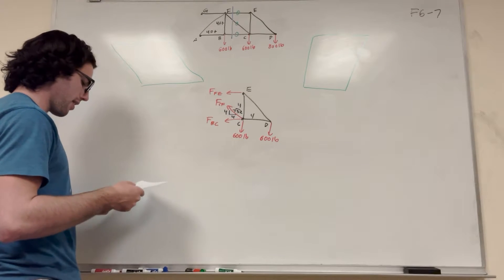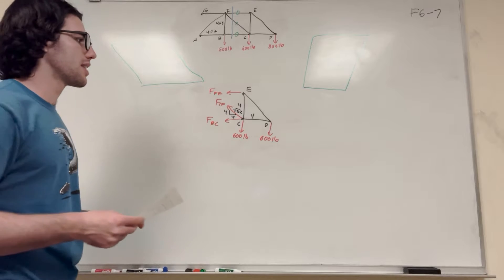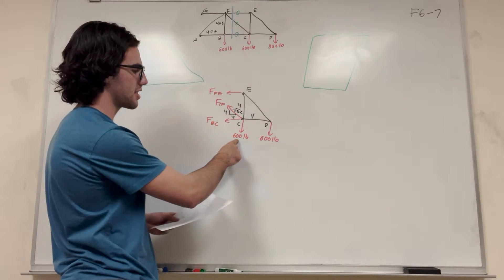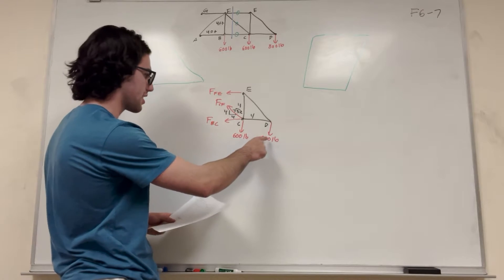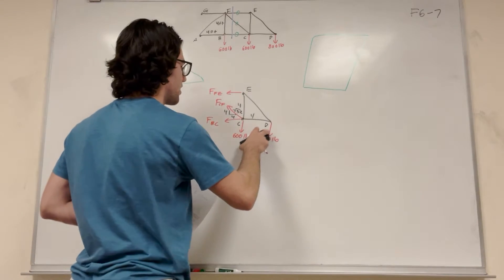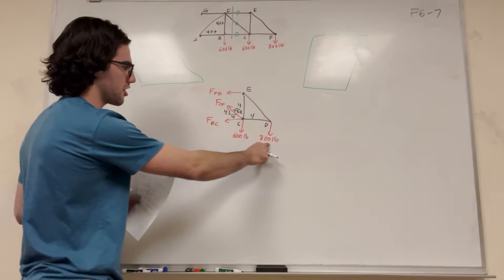So how should we go about finding this? What about sum of the forces in the Y direction? If we do sum of the forces in Y, you're going to see that this 600 is in it, this is 800. So the 600 and the 800 will be pushing down.